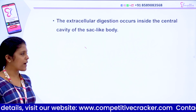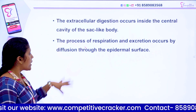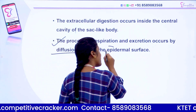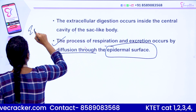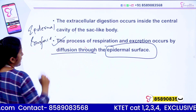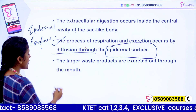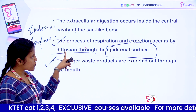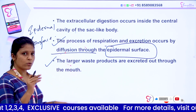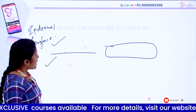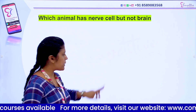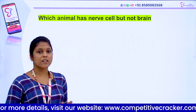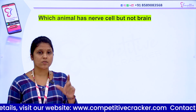Extracellular digestion takes place inside the central cavity of the sac-like body — the central cavity is the Coelenteron. The process of respiration and excretion occurs through diffusion through the epidermal surface. Large waste products are excreted through the mouth. Cylendron is the gastro-vascular cavity.